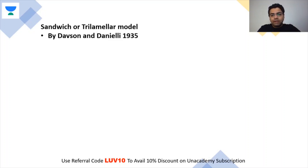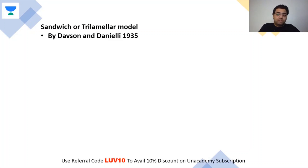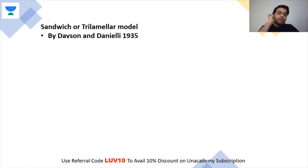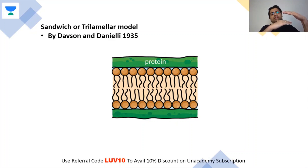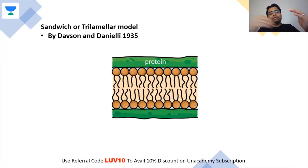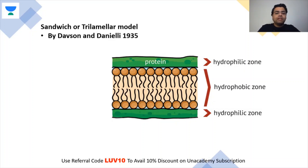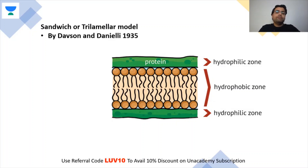In the sandwich model, think of a sandwich: the bread represents the protein. So there are two protein layers on the outside with a lipid bilayer in the middle — the lipids are stuffed between the two protein layers. The protein is hydrophilic, whereas the lipid is oily and hydrophobic.